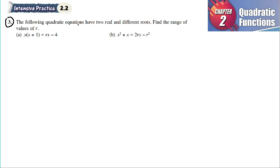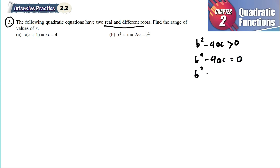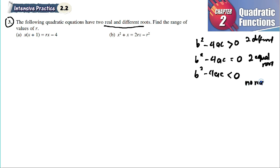The following quadratic equations have two real and different roots. We know that when we have two roots which are different, we use b squared minus 4ac. There are three conditions: larger than zero means two different real roots, equal to zero means two equal roots, and smaller than zero means no real roots.